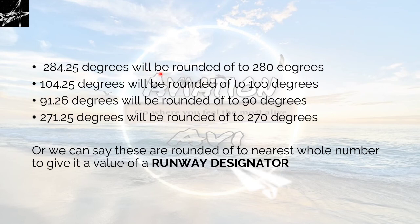But when we have to make it a runway designator, some modifications are done to it. We can say that 284.25 degrees will be rounded off to 280 degrees. 104.25 degrees will be rounded off to 100 degrees. 91.26 degrees will be rounded off to 90 degrees. 271.25 degrees will be rounded off to 270 degrees. These are rounded to the nearest whole number to give it a value of our runway designator. After getting these values—280, we may write 28, a 2-digit number or the 1 tenth of the magnetic north. 100 may be written as 10. 90 degrees will be written as 09, and 270 degrees will be written as 27. Actually, all these are the true bearings of the Indira Gandhi International Airport. If you find in the AIM, you will get these as the true bearings and these as the runway designators of the respective true bearings.